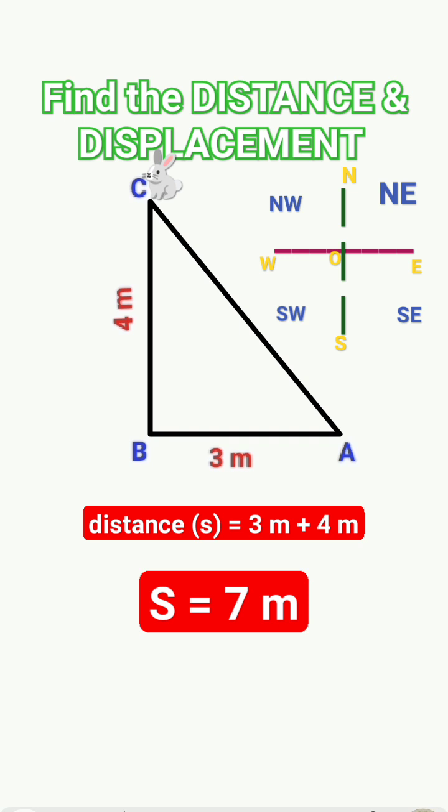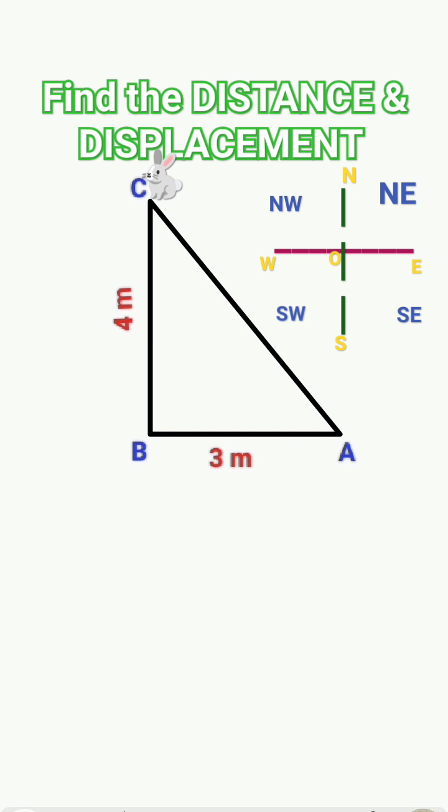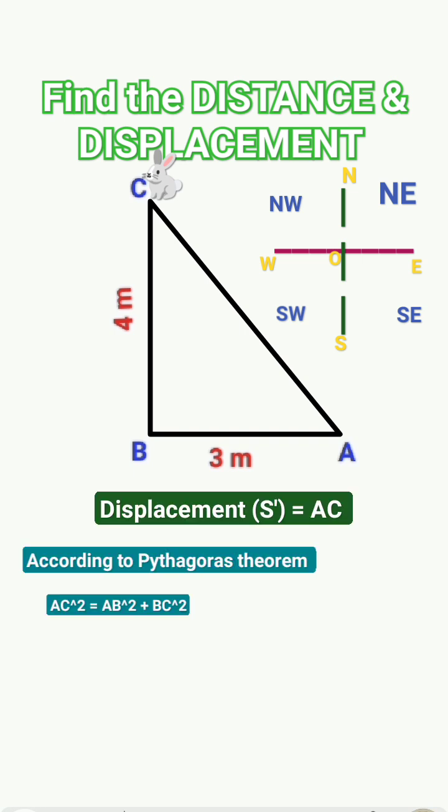So here A is at the origin. From A towards west the rabbit has moved, and then from west to north it has moved.